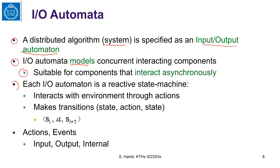What does it mean to have a reactive state machine? It means it interacts with its environment through actions — we use the word 'action' here, and sometimes 'events' as a loose description. While interacting with its environment, it makes transitions: when it performs an action and is in state Si, it moves to a new state Si+1. Actions are classified into input actions, output actions, and internal actions.